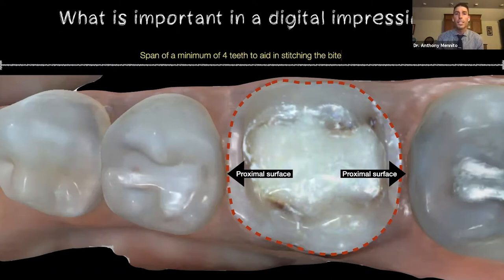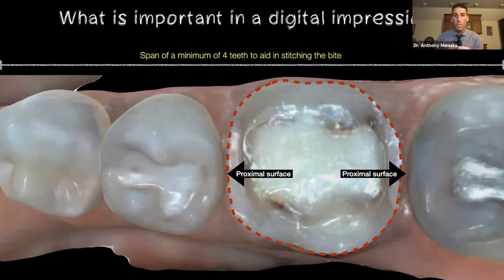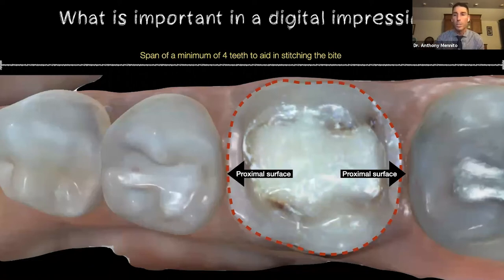You've also got to get the proximal surfaces of the adjacent teeth. Remember that you're going to build a restoration and fine-tune the contact points — both occlusal contacts and proximal surfaces. If you don't get adequate data on those surfaces, you're just guessing as to how much contact you're producing. And you really want to get a span of a minimum of about four teeth, because that gives the computer enough data to bring all of those scans together and create a nice digital model.